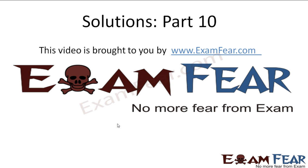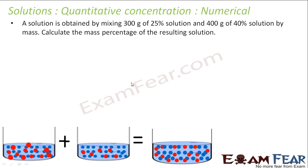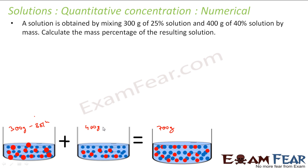Hello friends, this video on Solutions Part 10 is brought to you by examfear.com — no more fear from exam. The question says a solution is prepared by mixing 300 gram of 25 percent solution and 400 gram of 40 percent solution by mass. Find the mass percent of the resulting solution. So this is 300 gram total solution and this is 400 gram total solution — you mix them and you get 700 gram.